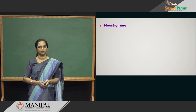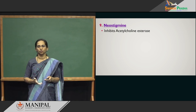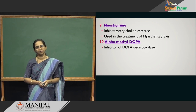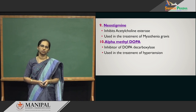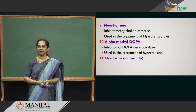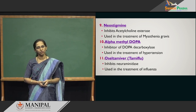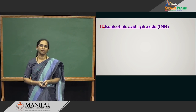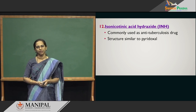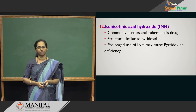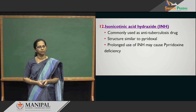Neostigmine inhibits acetylcholinesterase and is used to treat myasthenia gravis. Alpha-methyldopa is an inhibitor of dopa decarboxylase and is used to treat hypertension. Tamiflu — oseltamivir — inhibits neuraminidase and is used to treat influenza. Isonicotinic acid hydrazide (INH) is a very common anti-tuberculosis drug and a competitive inhibitor that resembles pyridoxal — so patients on INH therapy are also given vitamin B6 to prevent depletion.